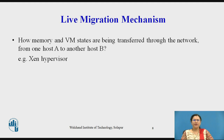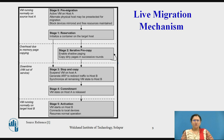Now the live migration mechanism. We will see one example of this particular mechanism — how memory and virtual states are being transferred through the network from host A to host B. For example, I am going to explain the Xen hypervisor, which is an example of this particular live migration mechanism. This diagram shows us one of the mechanisms which we call live migration.